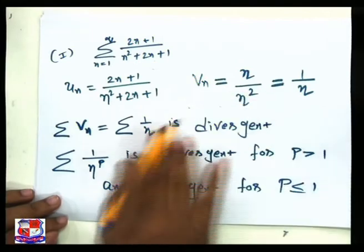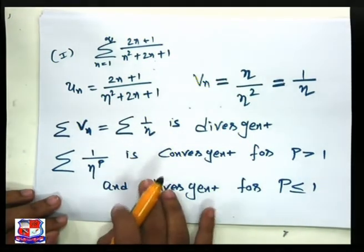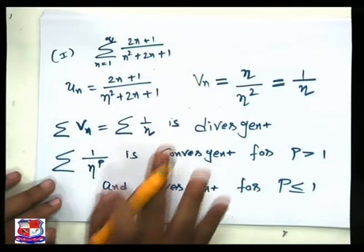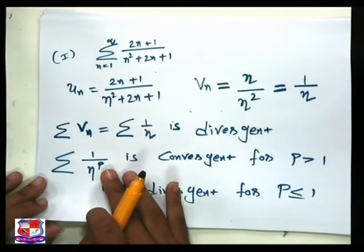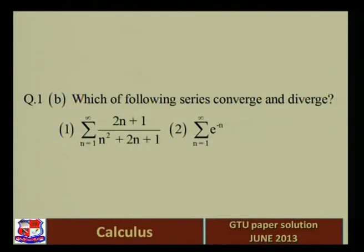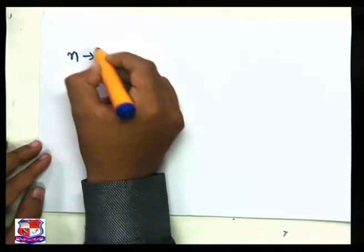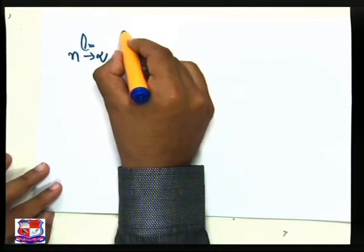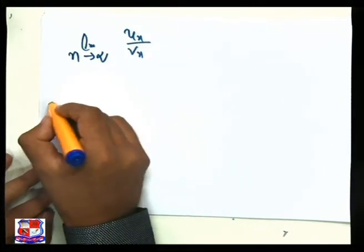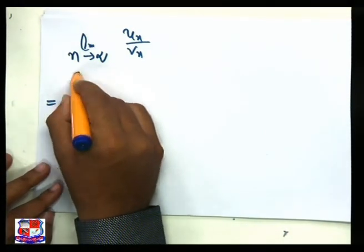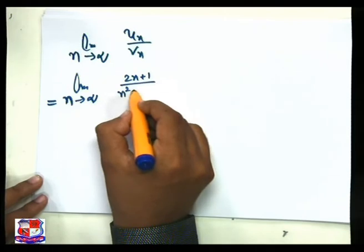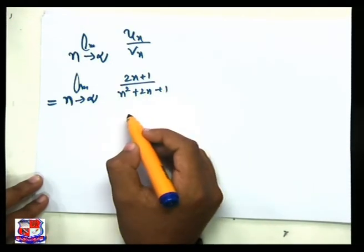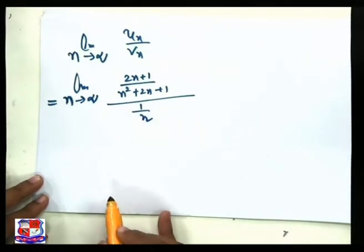From un we define vn, and we already know that vn is divergent. Now we find the limit of un upon vn as n tends to infinity. Here un is (2n+1)/(n²+2n+1) and vn is 1/n.